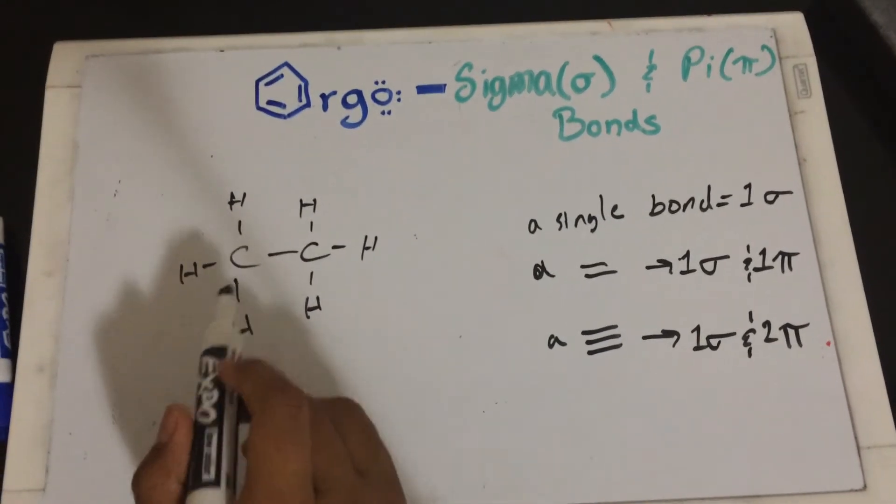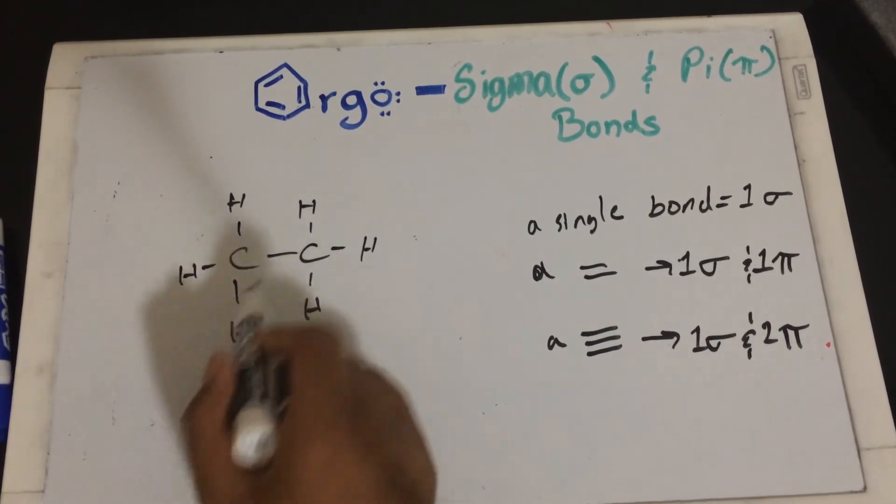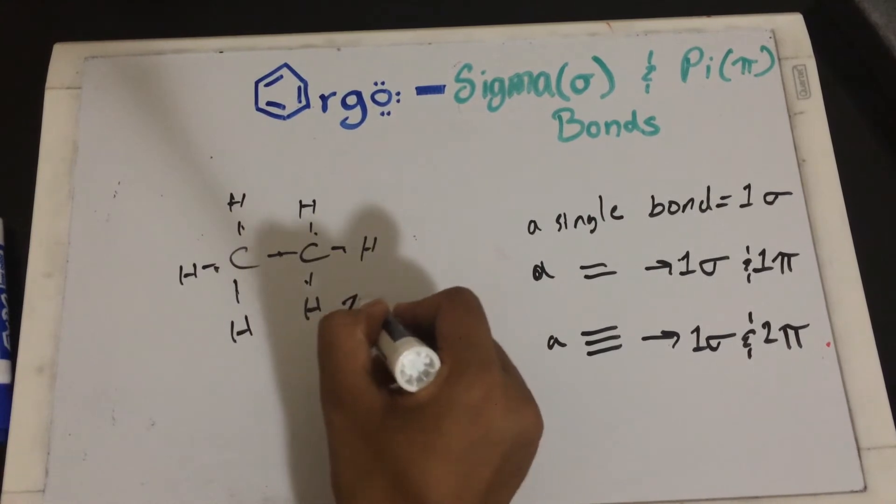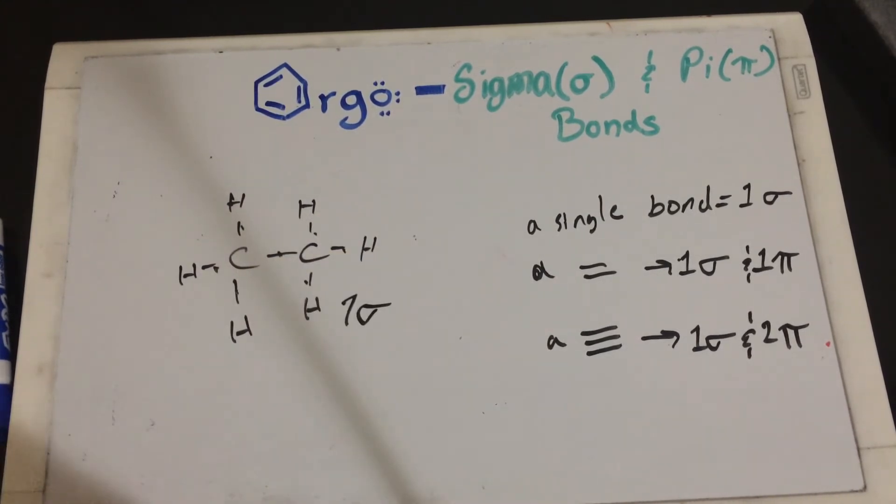So in this example, all we have is sigma bonds. So there's one, two, three, four, five, six, seven. There's seven sigma bonds in this example.